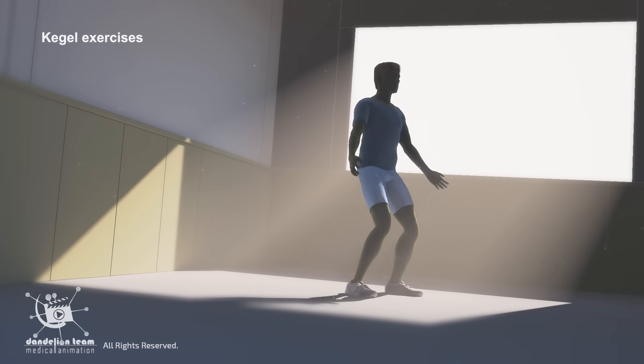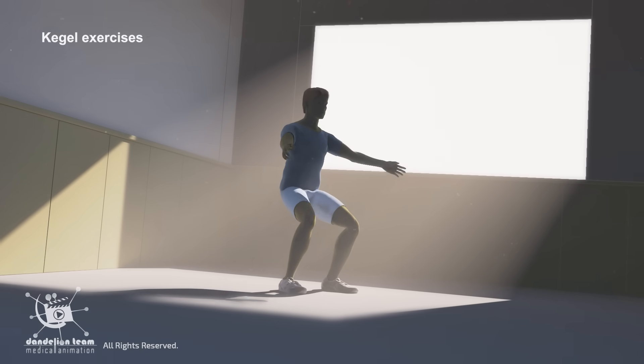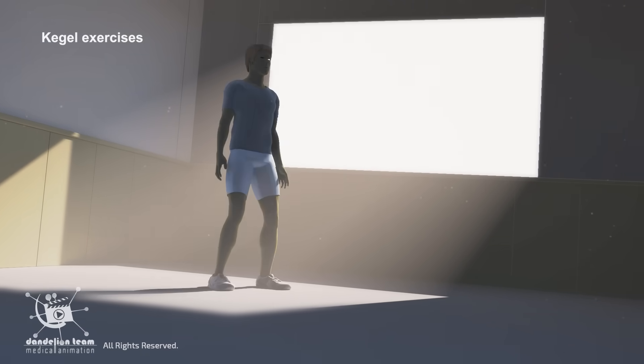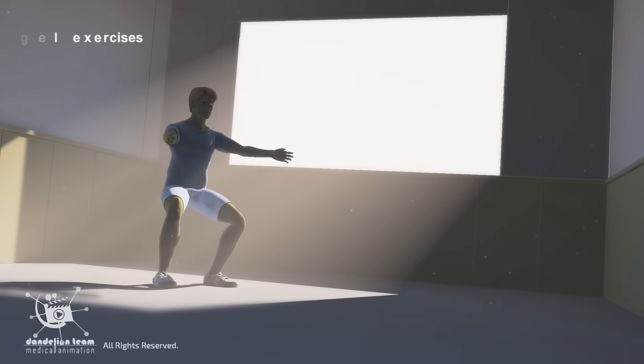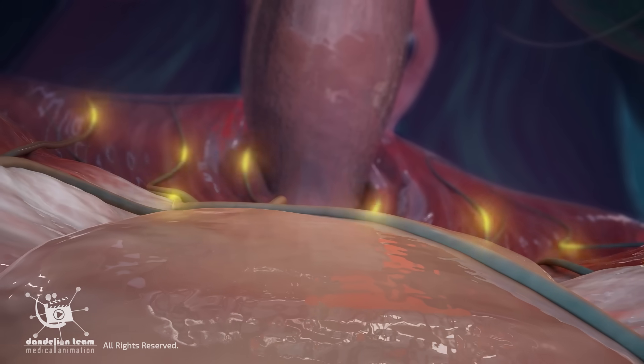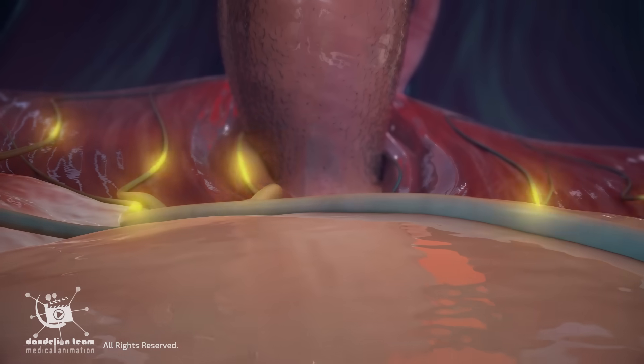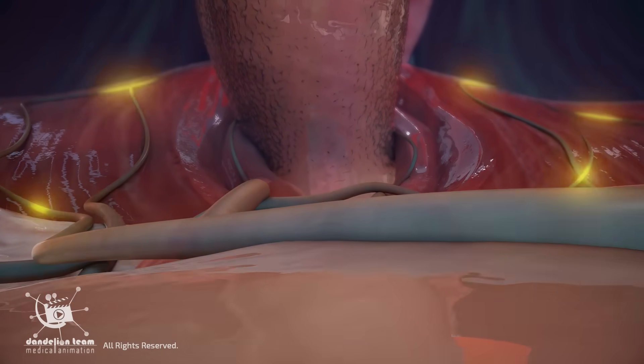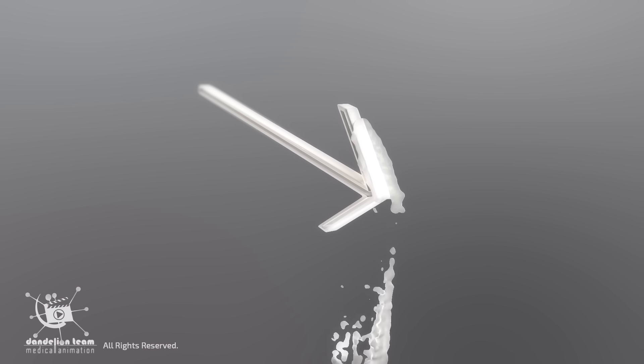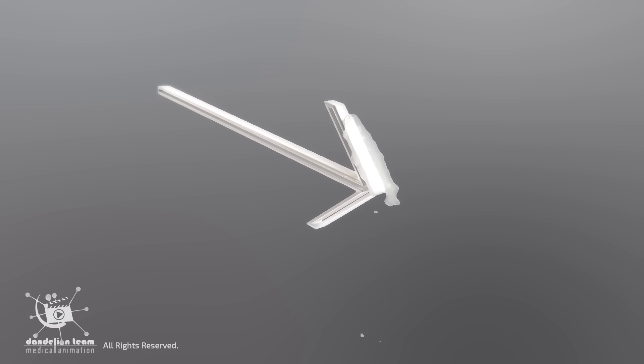Pelvic floor exercises, also known as Kegel exercises, are a proven method to help men gain better control over ejaculation. These exercises strengthen the PC muscle, a part of the pelvic floor that plays a key role in ejaculation control. In cases of penile hypersensitivity,